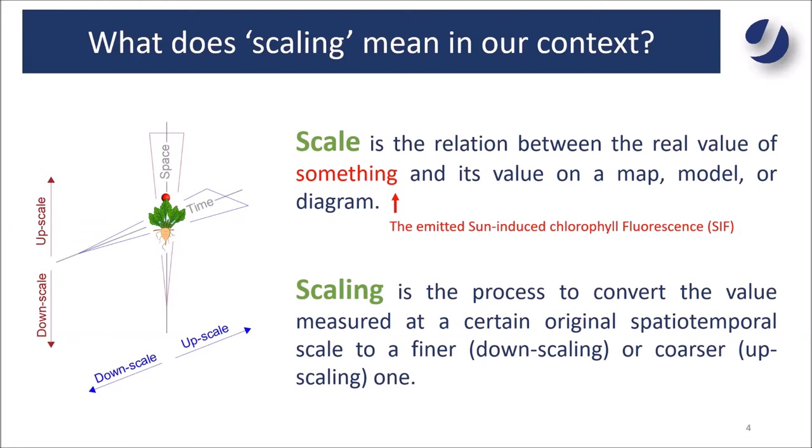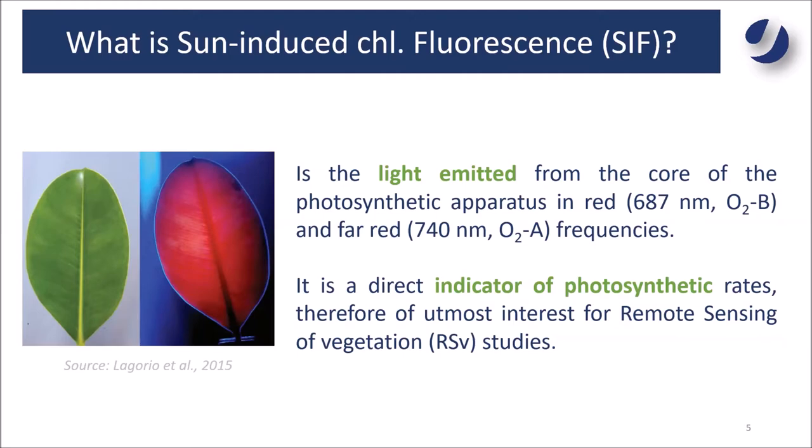If we convert the original value to a finer scale, we are talking about downscaling. If we convert the original value to a coarser scale, we are talking about upscaling. Most of the examples I'm going to give you are about up and downscaling hyperspectral data of the sun-induced chlorophyll fluorescence data, which from now on I will mention as SIF.